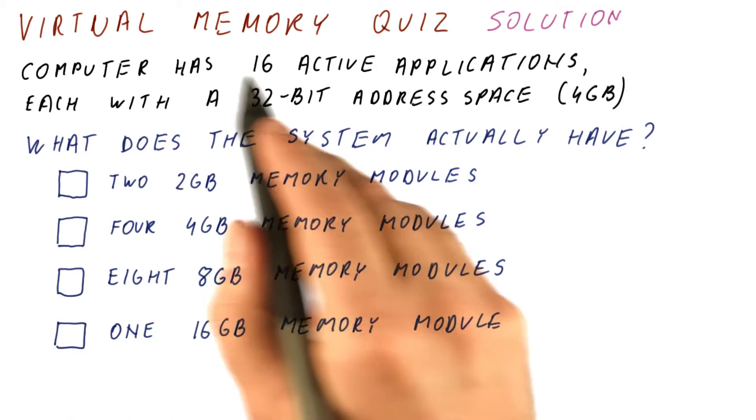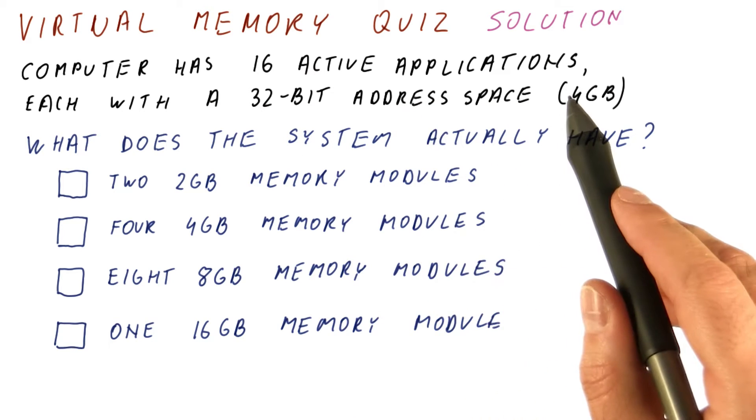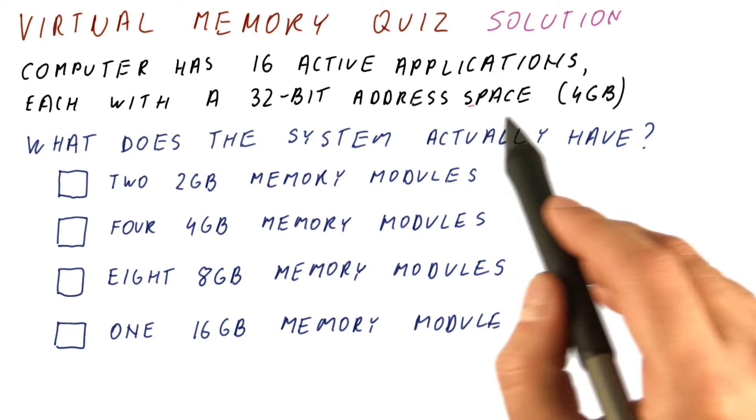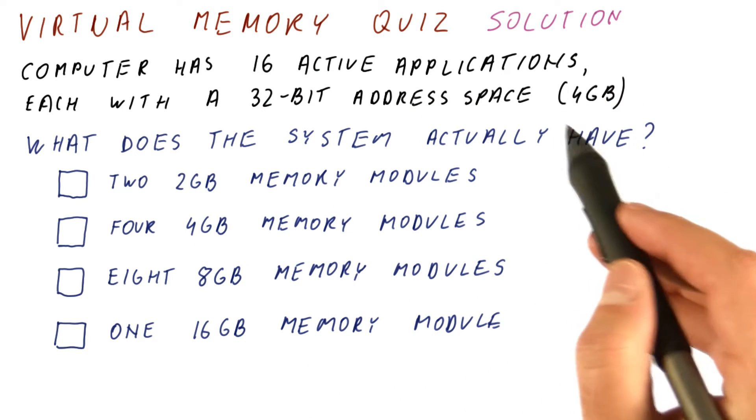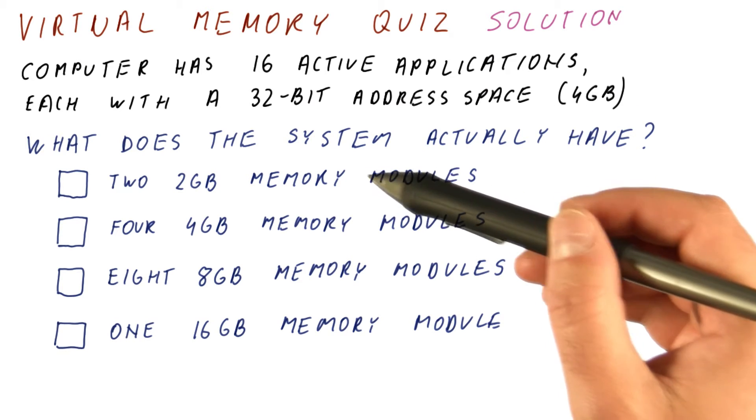Let's look at the solution to our virtual memory quiz. We said that the computer has 16 active applications, each with a 32-bit address space. So each potentially sees a 4 gigabyte memory. What is the real memory in the system?